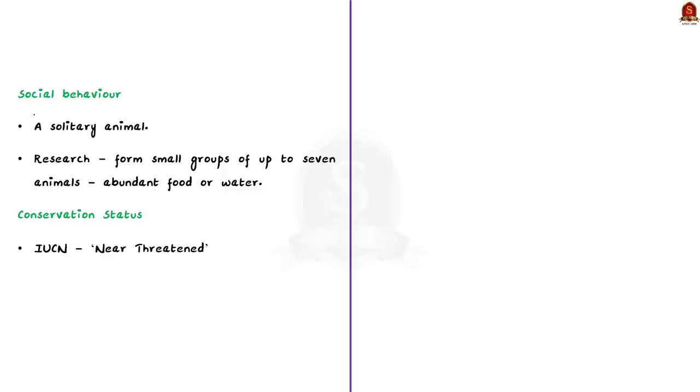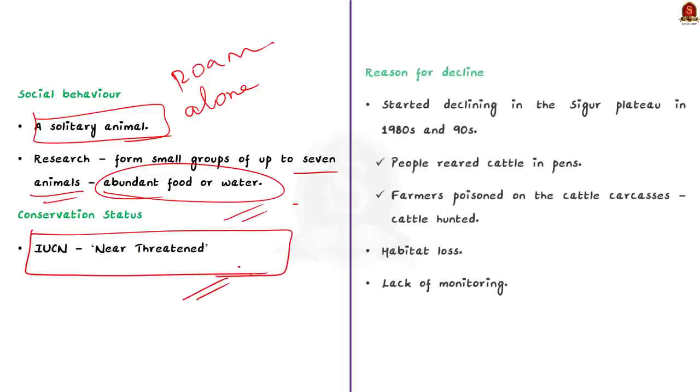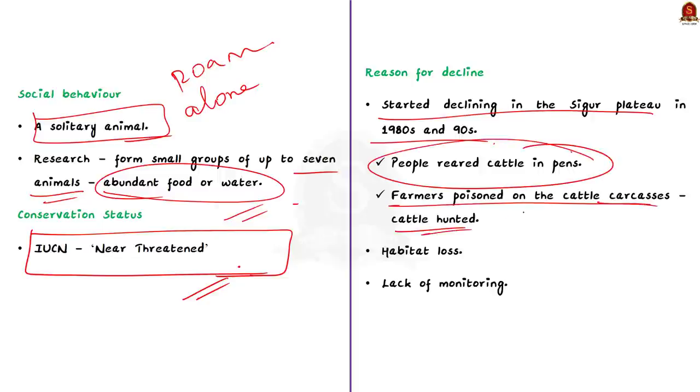Talking about the social behavior, it is said to be a solitary animal roaming alone. But recent researchers show that they form small groups of up to 7 animals in areas with abundant food or water. Then coming to its conservation status, the IUCN has categorized it as near-threatened species on a global scale. Coming to the reason for decline, it started declining in the Sigur Plateau in 1980s and 90s because people reared cattle in pens. After the carnivores preyed on their cattle, the farmers would poison whatever remained of the carcasses of cattle. When the hyenas again preyed on these poisoned carcasses, it would eventually die. It also caused death of vultures.